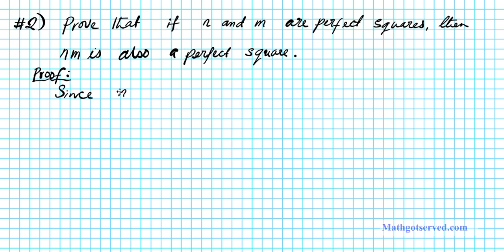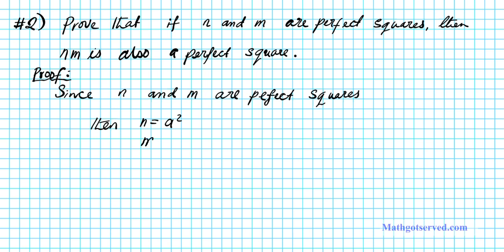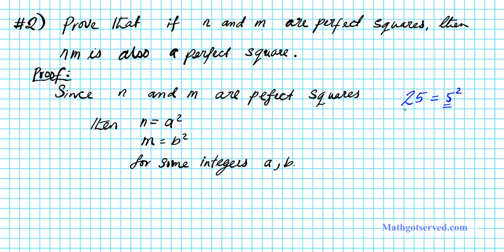Proof: since n and m are perfect squares, then n is equal to a squared and m is equal to b squared for some integers a and b. Any number that is a perfect square can be expressed as an integer squared. For example, 25 is a perfect square because it can be expressed as 5 squared, and notice that 5 is an integer. So this is what it means to be a perfect square by definition.